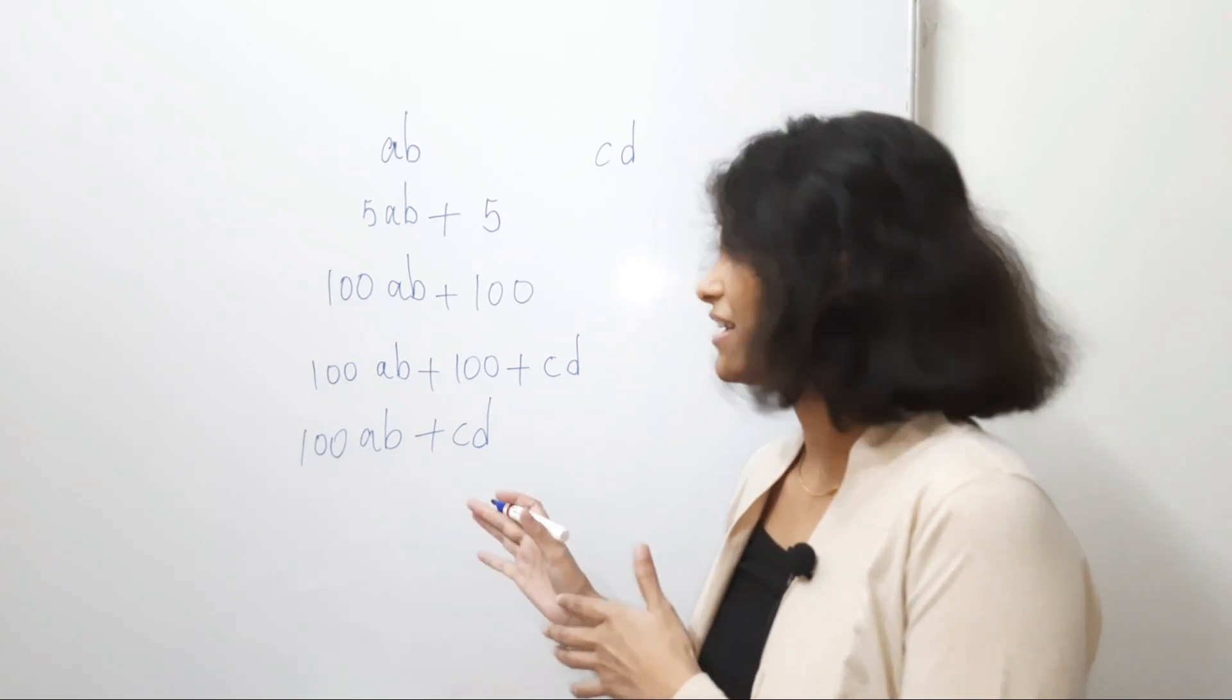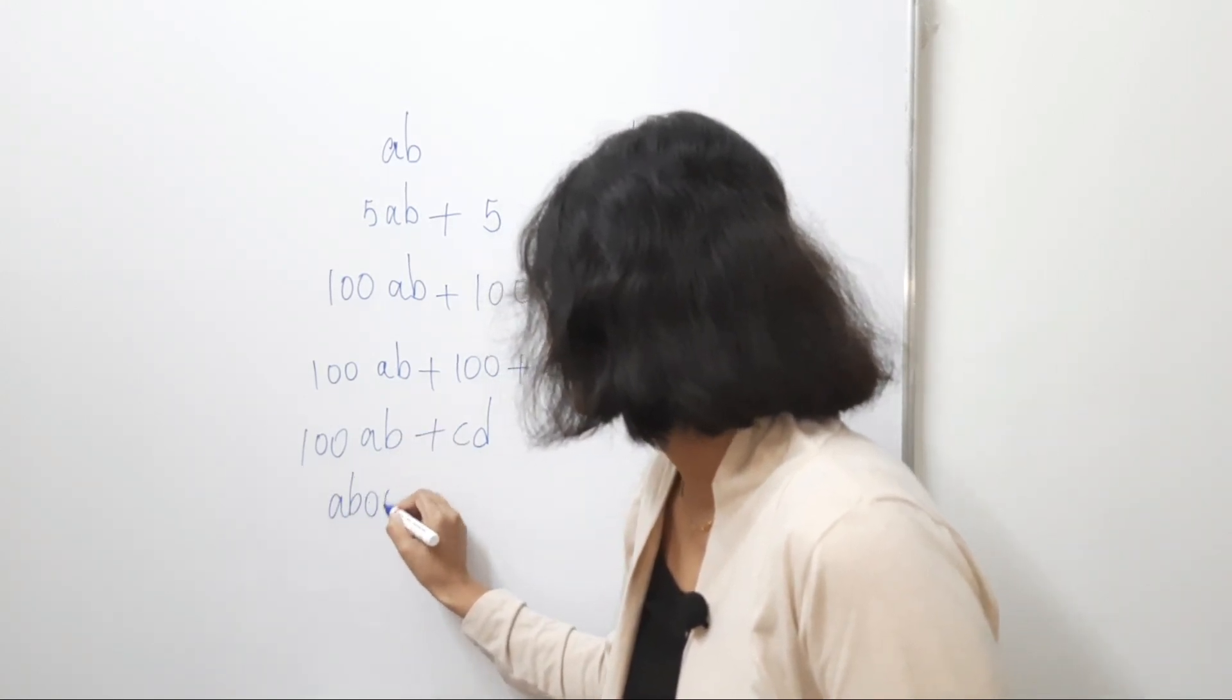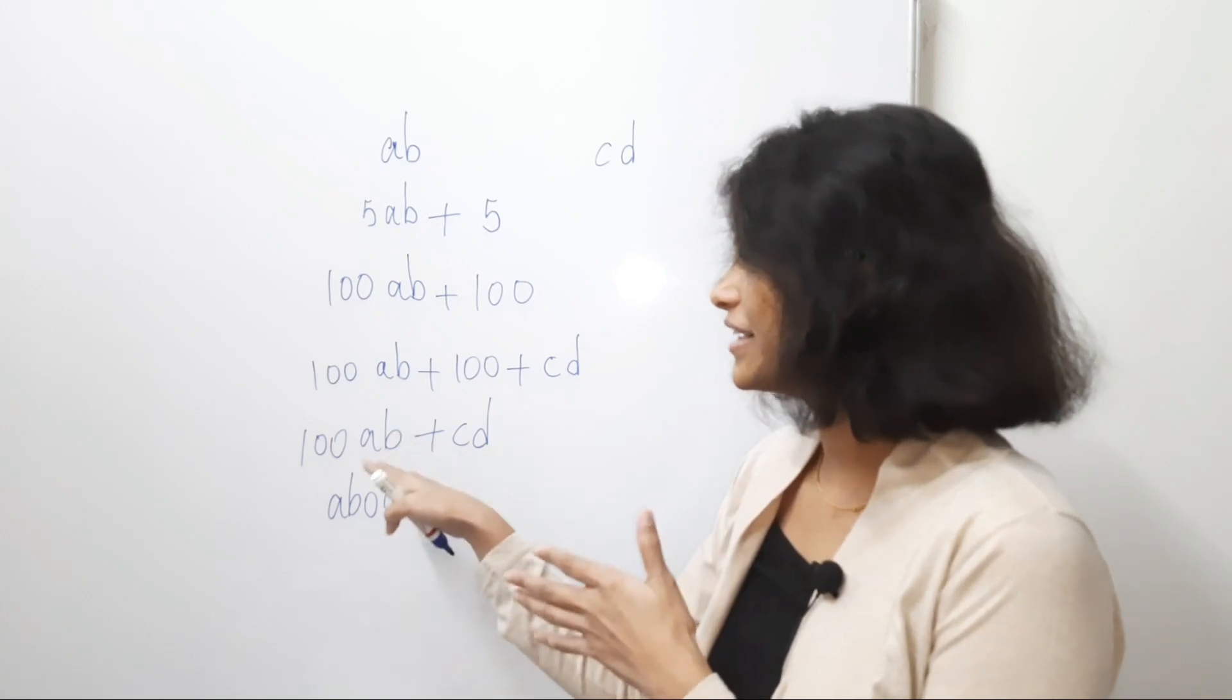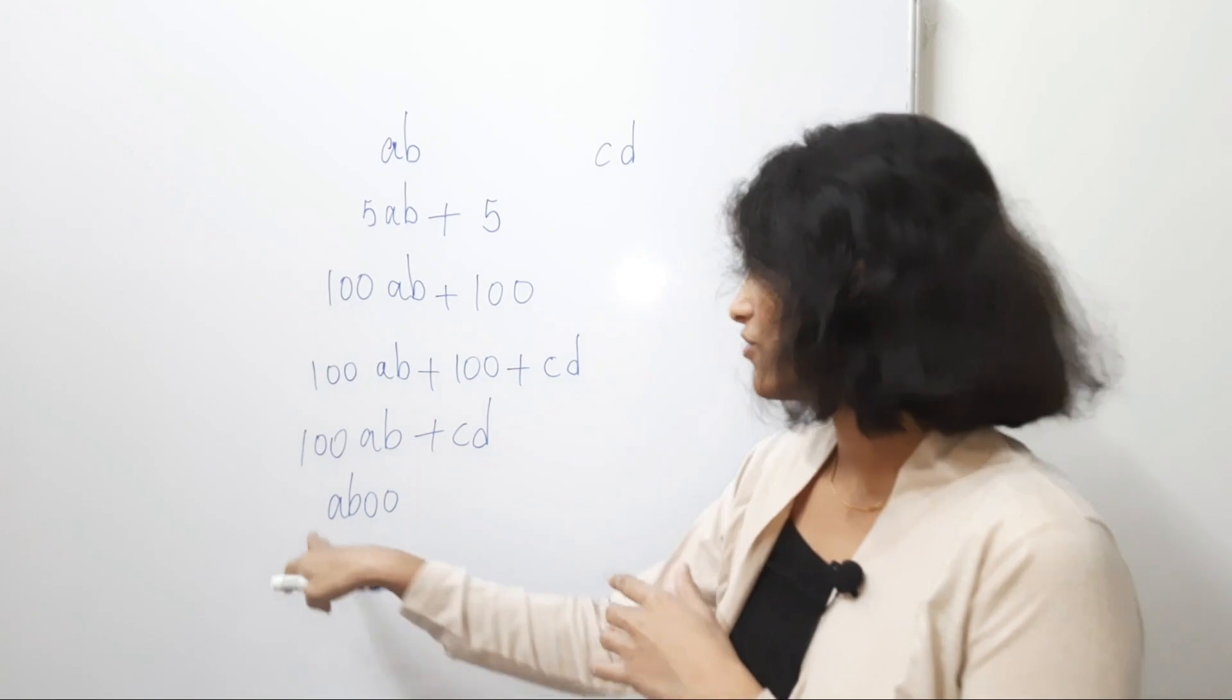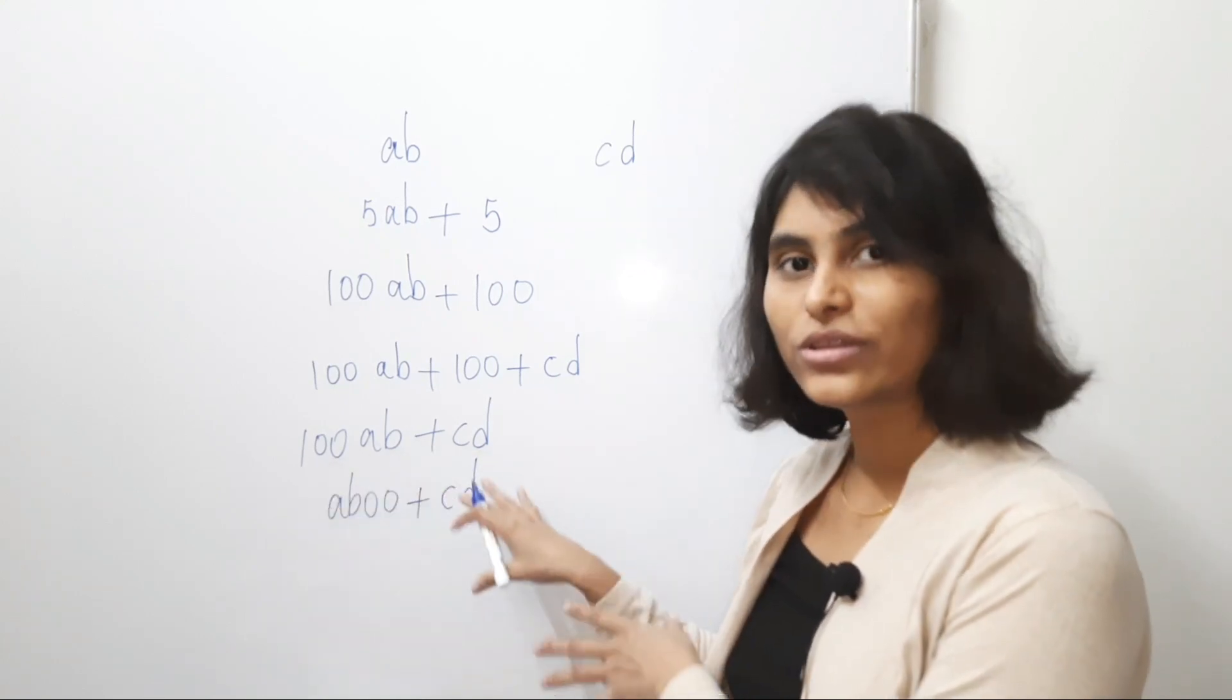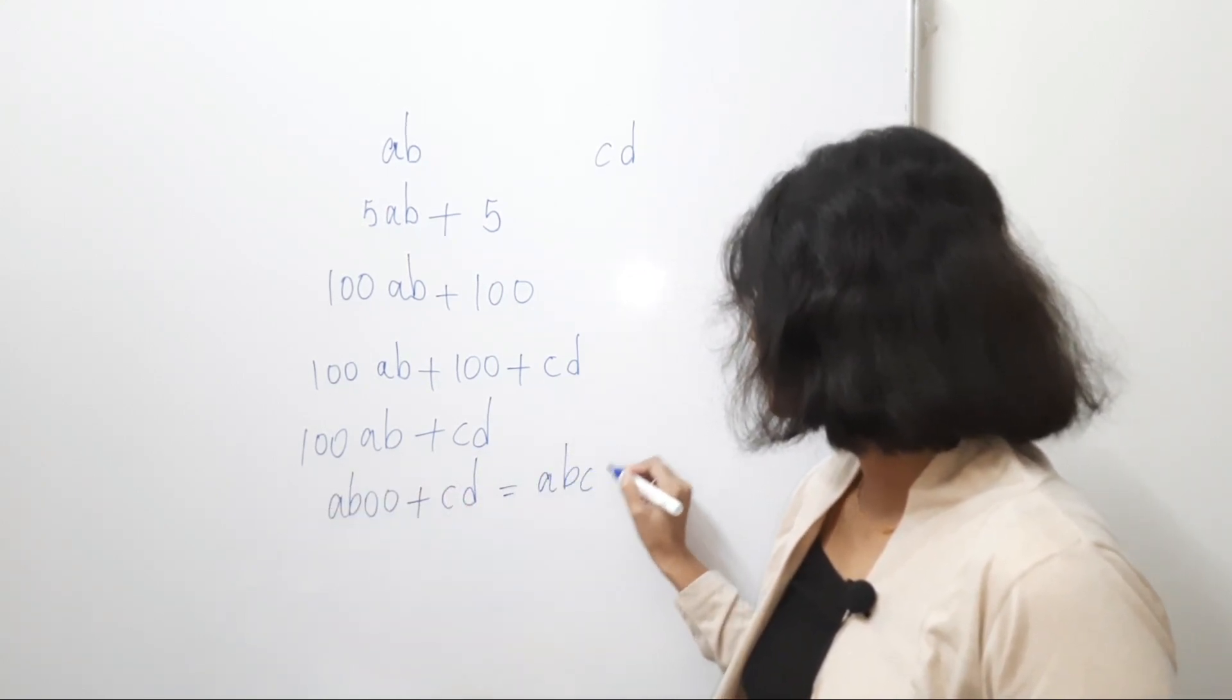But this is nothing but AB00. Right? Because we are multiplying by 100. Suppose that AB is 23, then 100 times 23 becomes 2300. So, that is what I have written. And this CD is as it is. Now, the whole thing becomes ABCD. Right?